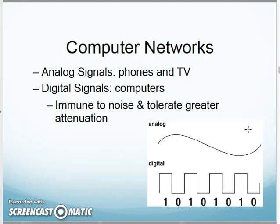With a computer network, we have analog signals — phones and televisions were traditionally analog — while computers were digital. Digital signals are immune to noise and tolerate attenuation better, which is why over time phones and television have been converted and sampled into digital signals for movement across networks. Networks have always traditionally used digital signals.